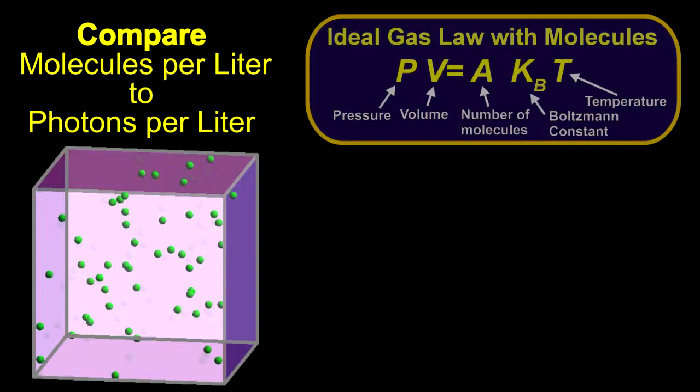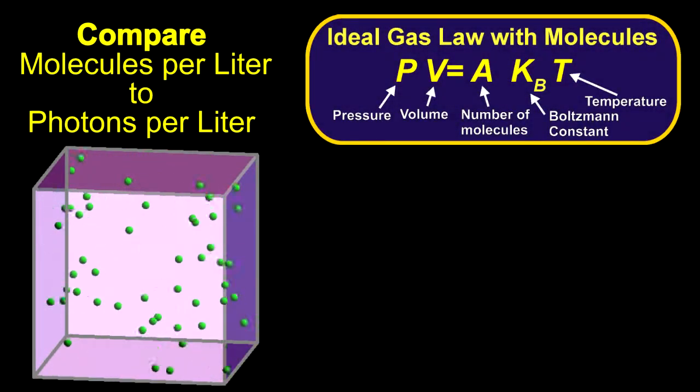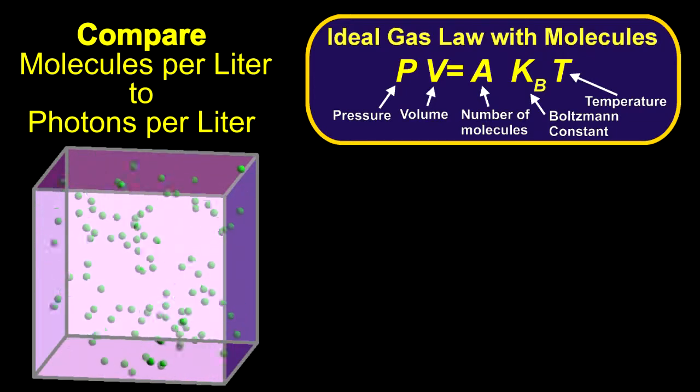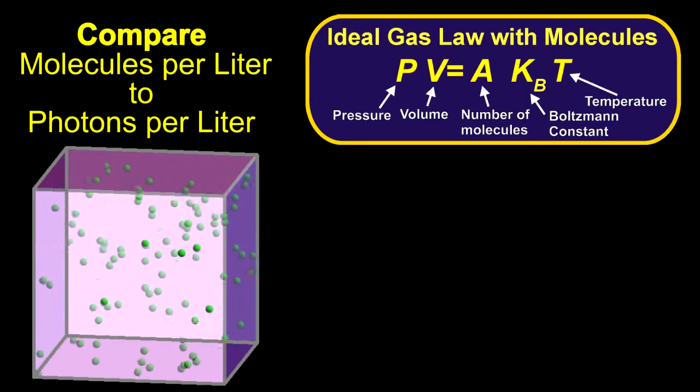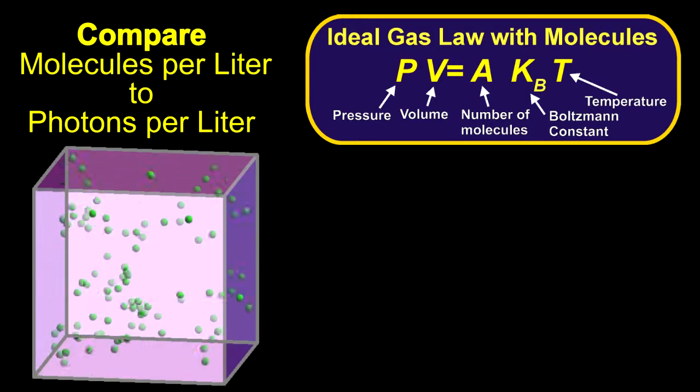Using that model, the teacher derived the ideal gas law: pressure times volume equals number of molecules times the Boltzmann constant times the temperature. At least, that's the way we learn the law in today's science classes.